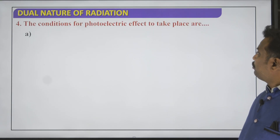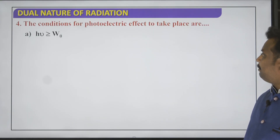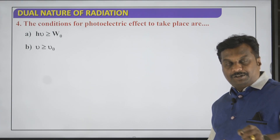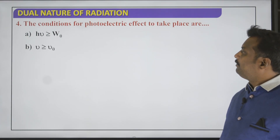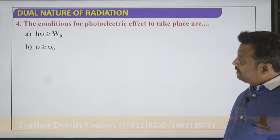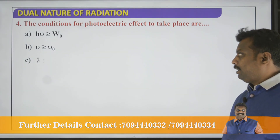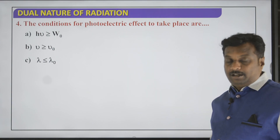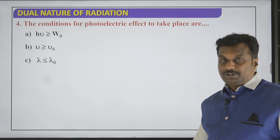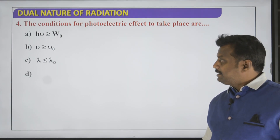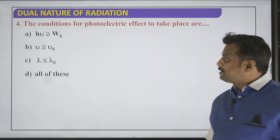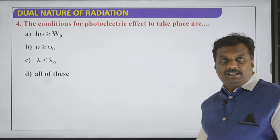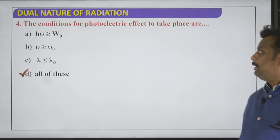The condition for the photoelectric effect to take place: HV (photon energy) should be greater than work function; frequency (ν) should be greater than threshold frequency (ν naught); and wavelength should be less than threshold wavelength (λ naught). All three conditions are valid, so the right answer is all of the above.